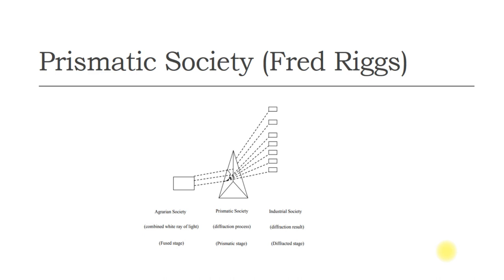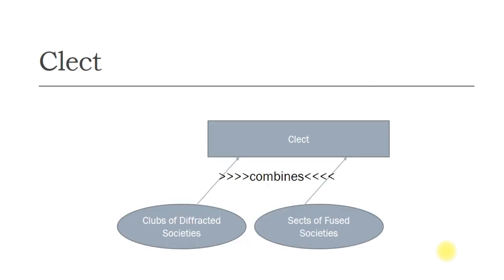Next, we will take a look at what is CLECT, which is a term used by Fred W. Riggs. He uses this term CLECT to denote a typical prismatic group which uses modern and associated methods of organization but retains goals of a transitional type which is diffuse and particularistic. Thus, CLECT combines features of club of diffracted societies and sects of the fused societies.